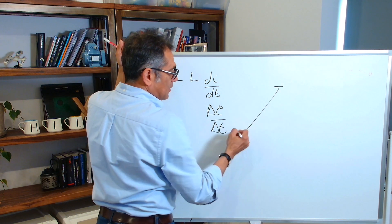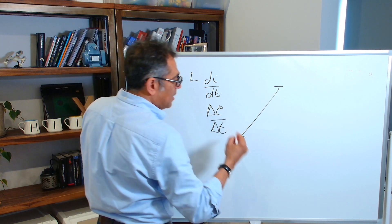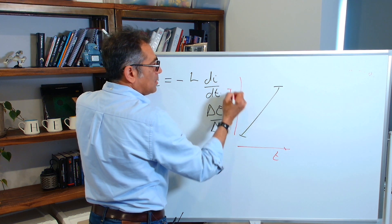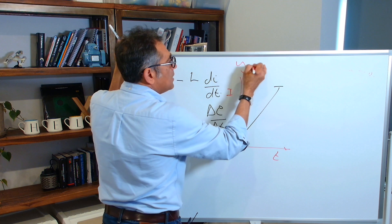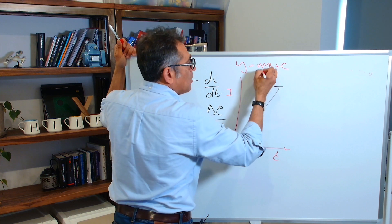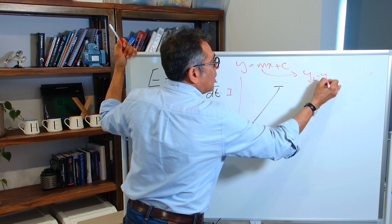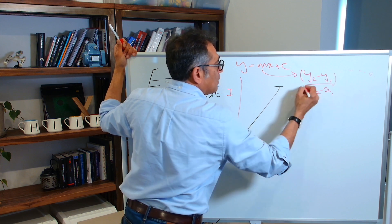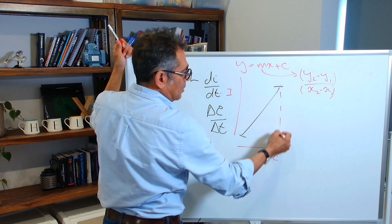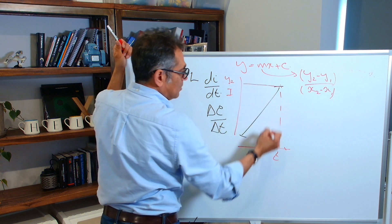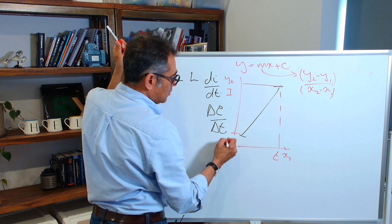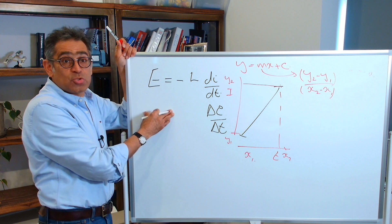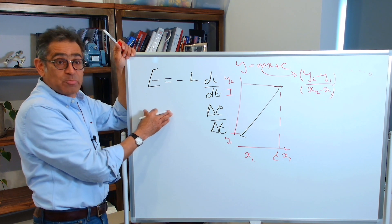If you've got a straight line, then if this is time, this is current, then y is equal to mx plus c, where m is the gradient, y2 minus y1 divided by x2 minus x1. So this will be y2, this will be x2, this will be y1, and this will be x1.